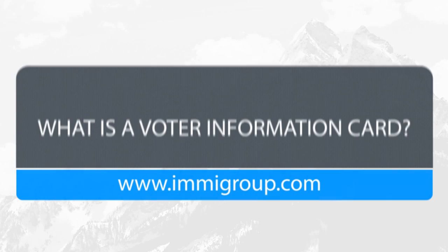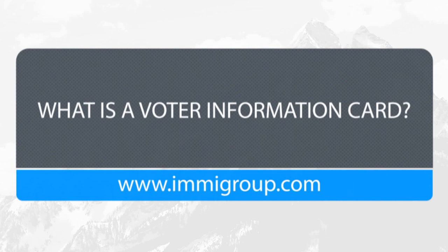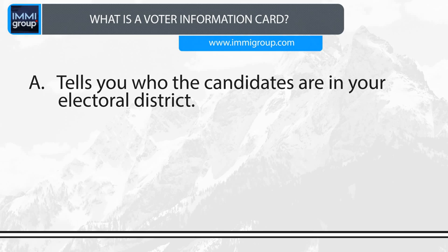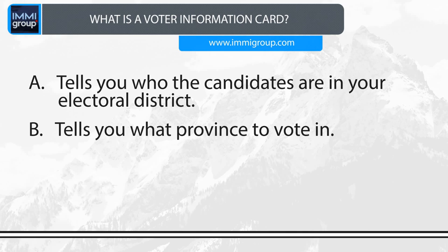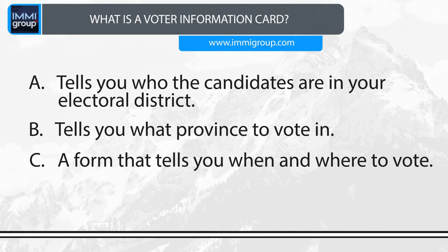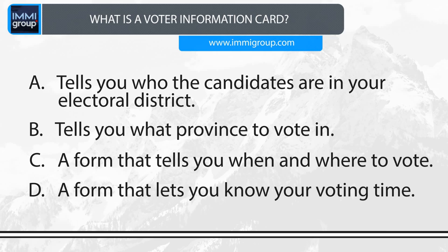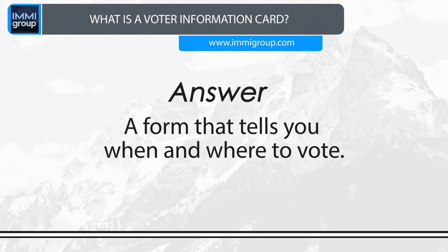What is a voter information card? A. Tells you who the candidates are in your electoral district. B. Tells you what province to vote in. C. A form that tells you when and where to vote. D. A form that lets you know your voting time. Answer: A form that tells you when and where to vote.